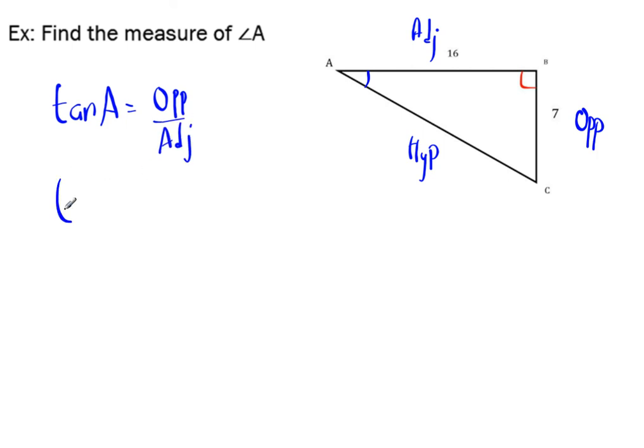So what we have is tan of A is equal to opposite over adjacent. And then tan of A is equal to opposite is 7, adjacent is 16. And then what we need to do, once we reach this step, this is where we have to use our inverse trigonometric function. So I'm going to rewrite this as A is equal to tan negative 1.